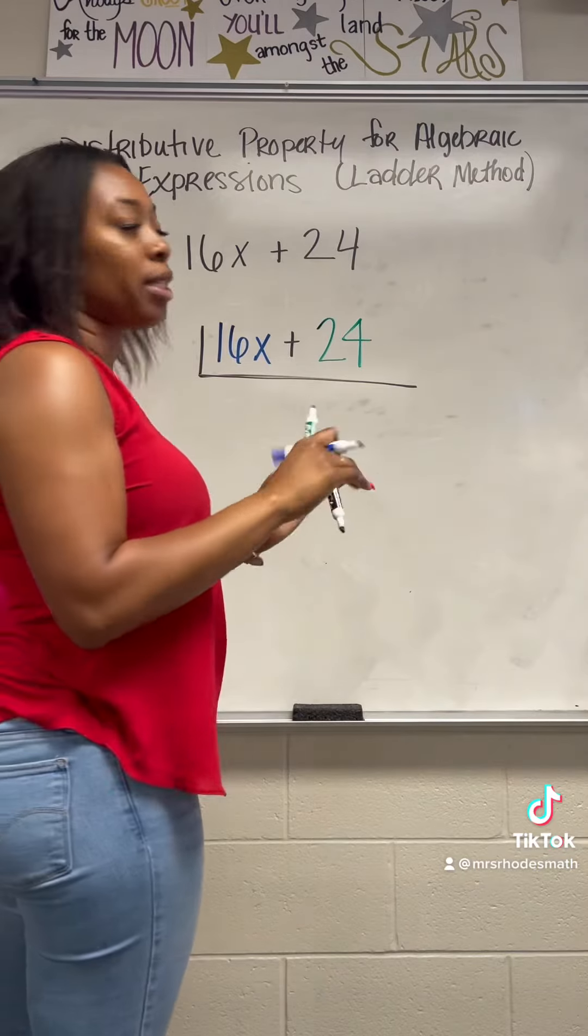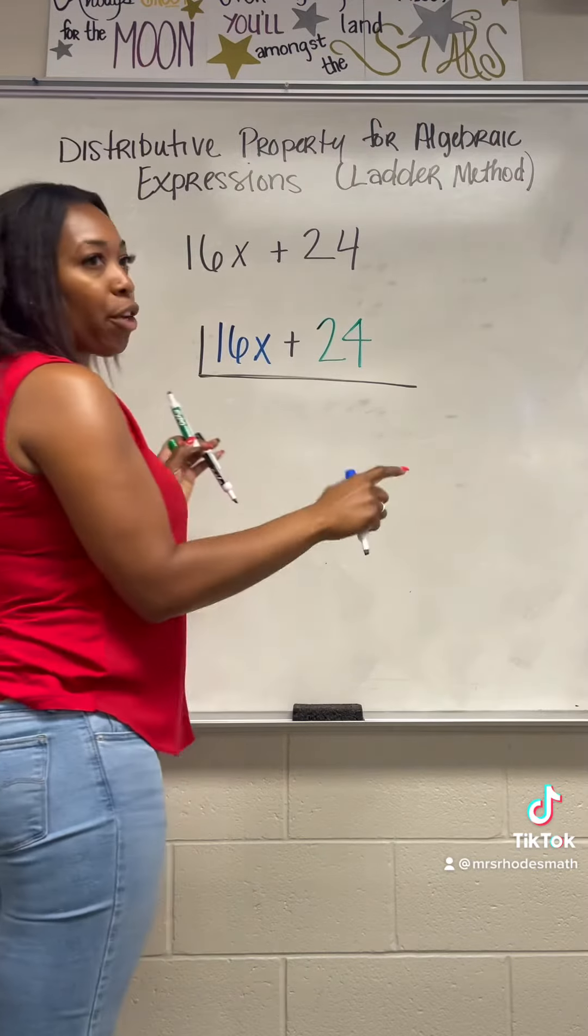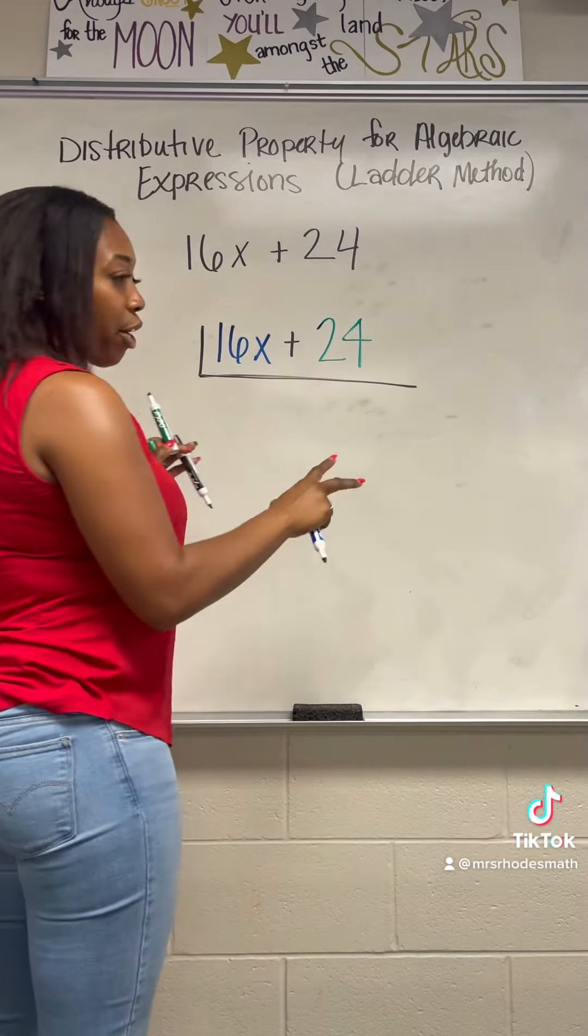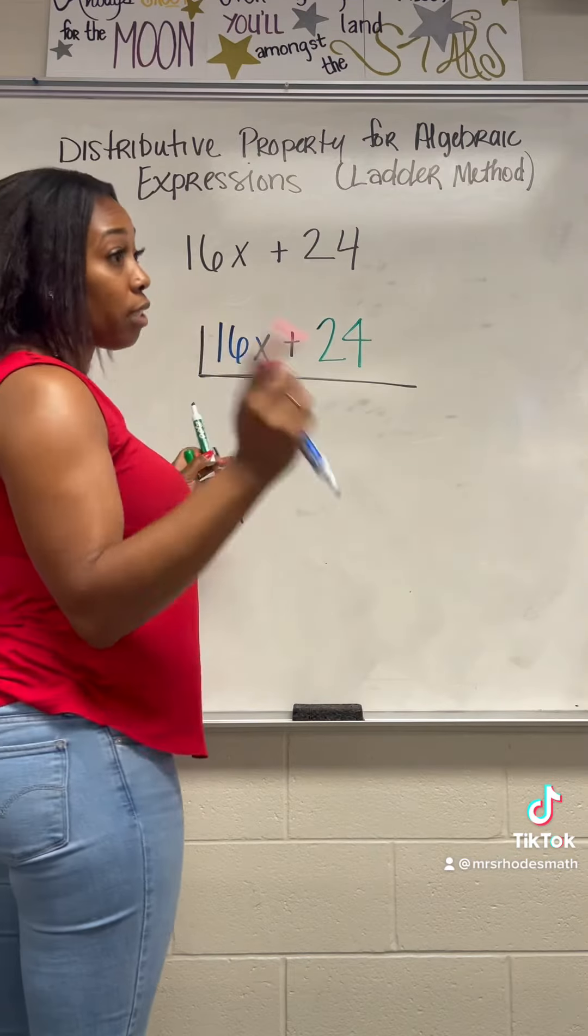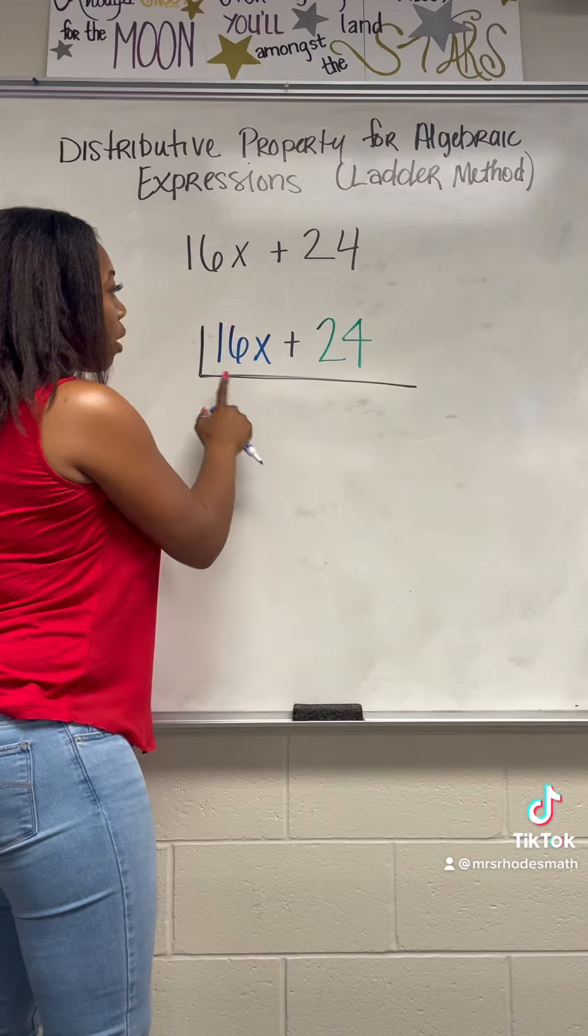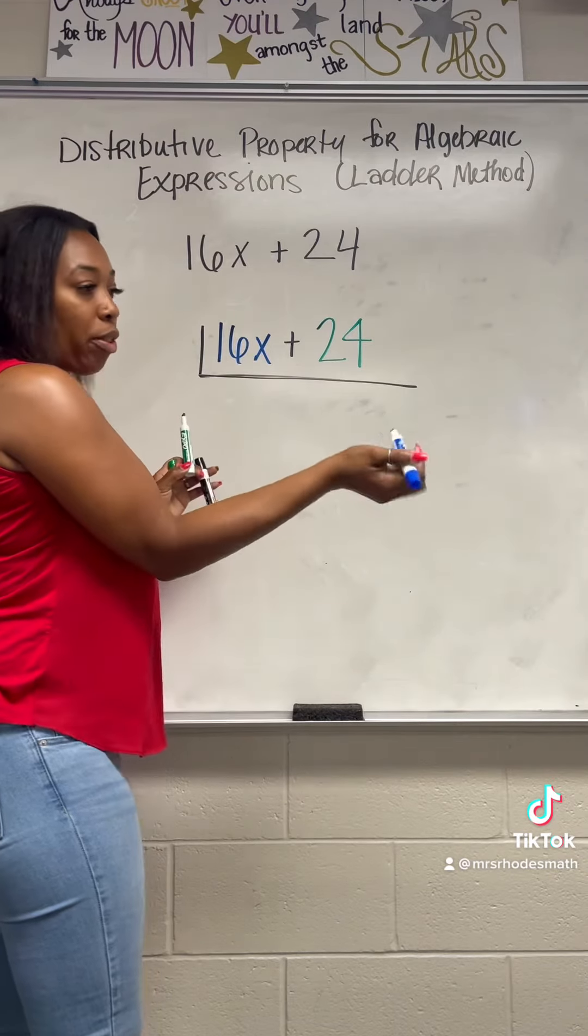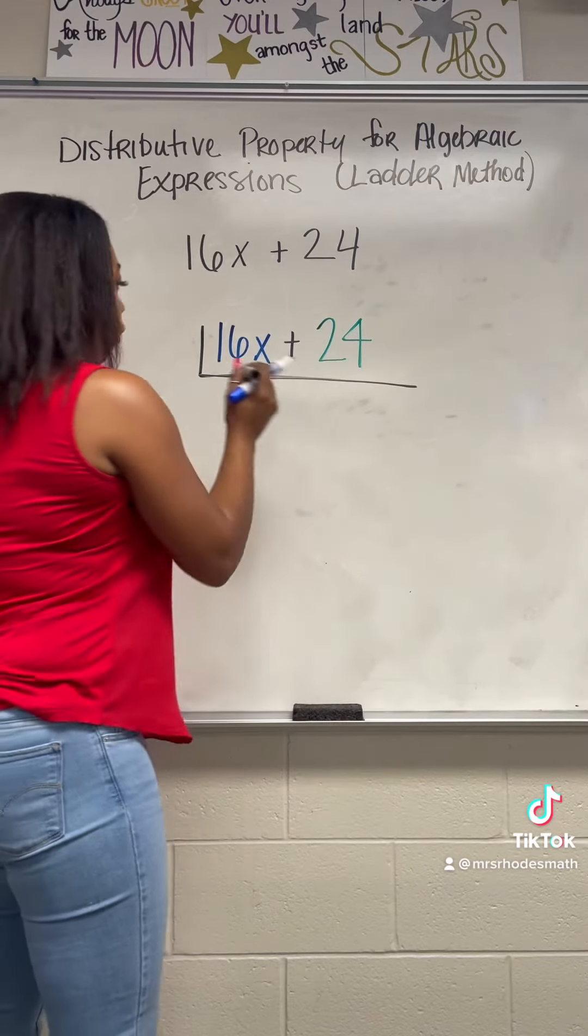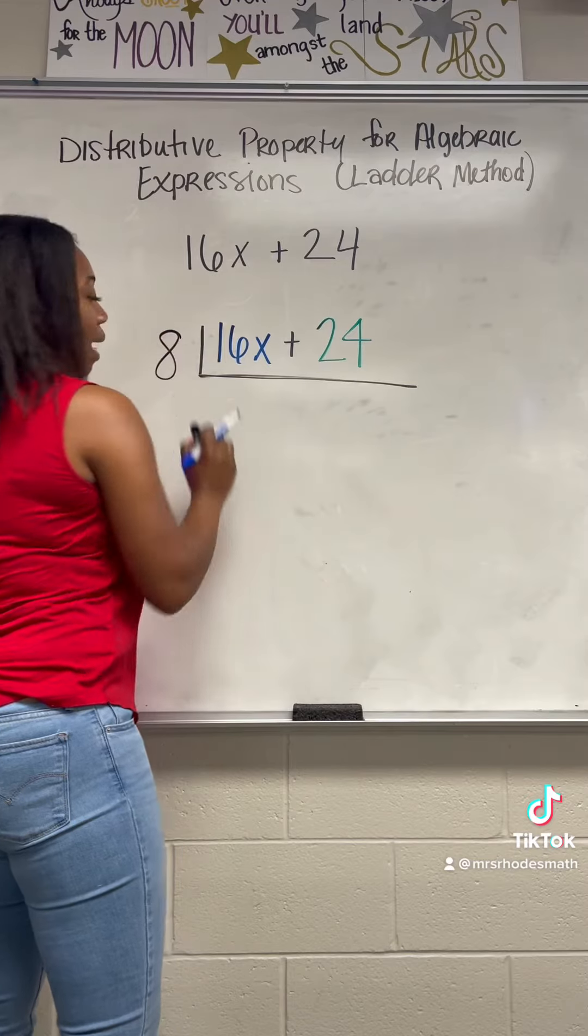What you're going to do is look at these as two separate things and figure out what factors they actually share. The greatest common factor—in case you don't remember, that's GCF—for 16 and 24 is 8. So I'm going to write that over here.